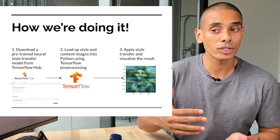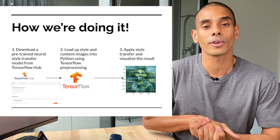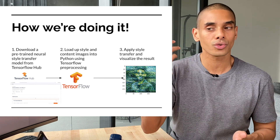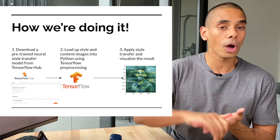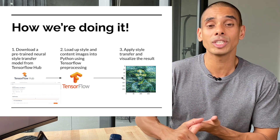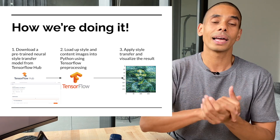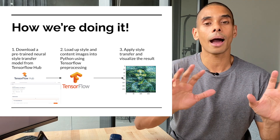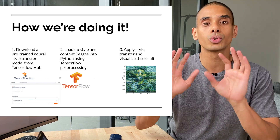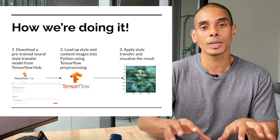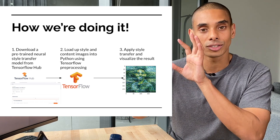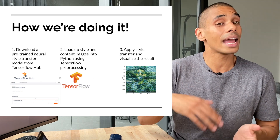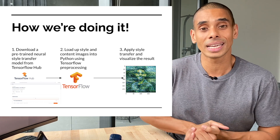We're going to be downloading a pre-trained neural style transfer model from TensorFlow Hub, which will make it way faster to train our model. We're then going to load up our style and content images into Python within our Jupyter Notebook and apply a little bit of pre-processing with TensorFlow. Then we'll apply our style transfer model to generate our stylized image, visualize it, and if you want, you can also output it using OpenCV.